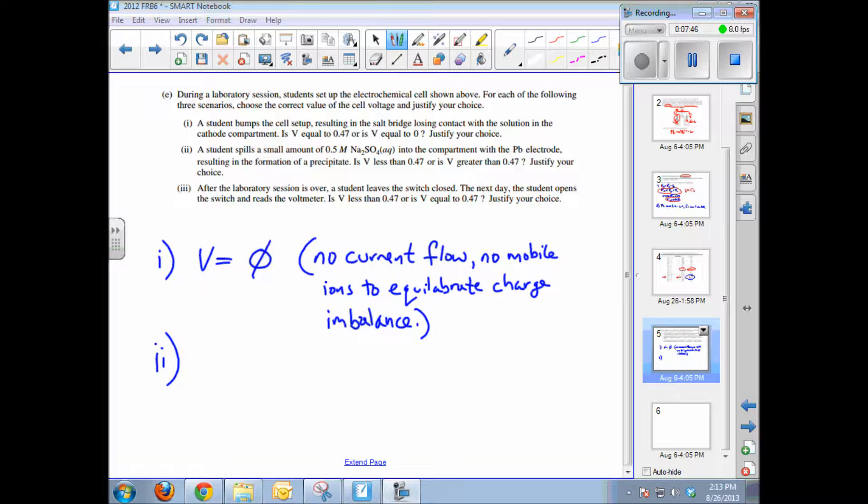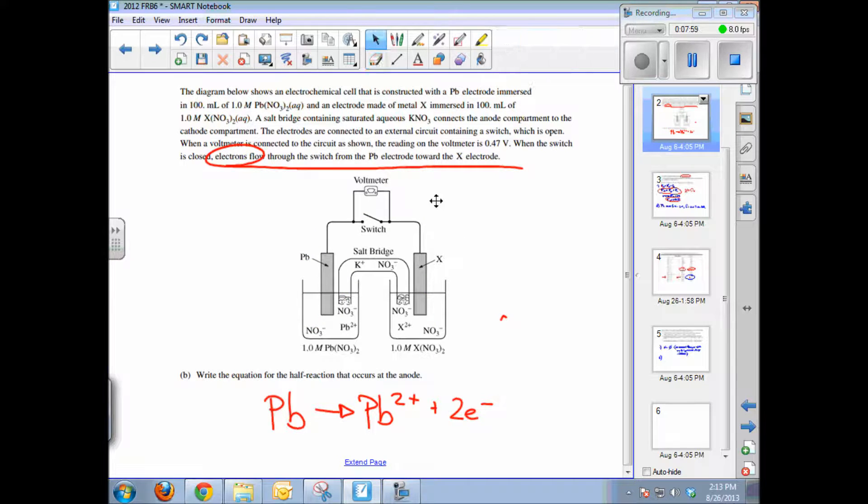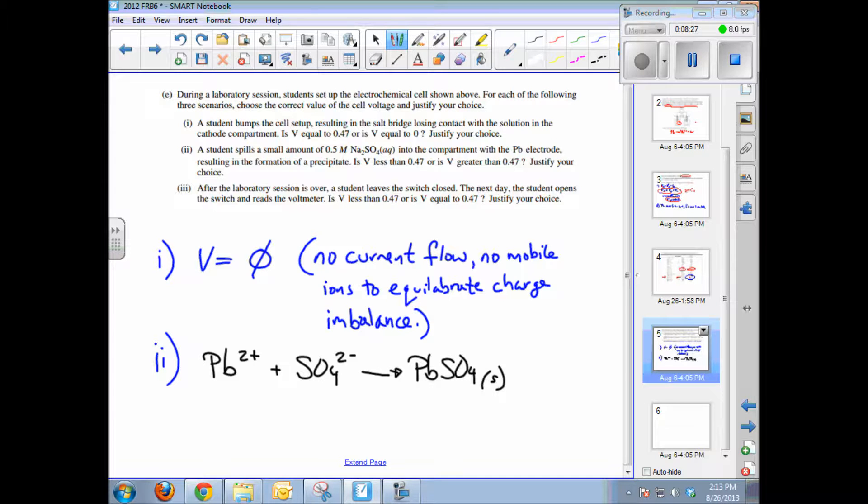The second part says a student spills a small amount of sodium sulfate into the compartment with the lead electrode. So we need to go back to our diagram and look at the lead electrode right here. The side with the lead electrode also includes lead 2+ in solution. And lead 2+ combined with sulfate, you'll have a reaction that looks like this. Lead 2+ in solution plus the sulfate ion from the sodium sulfate that the student spilled is going to precipitate a solid. It's going to produce lead sulfate solid.